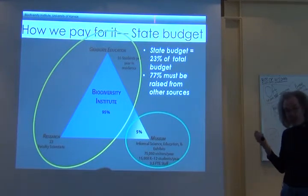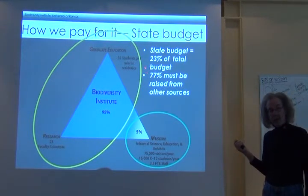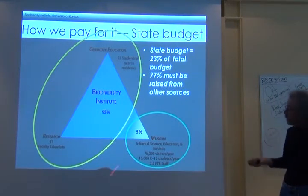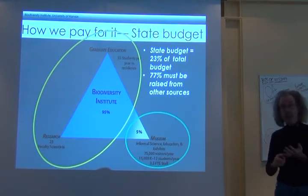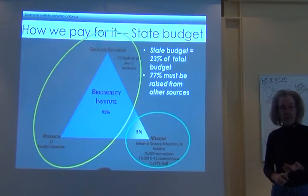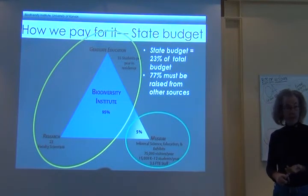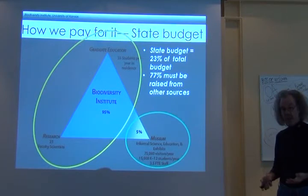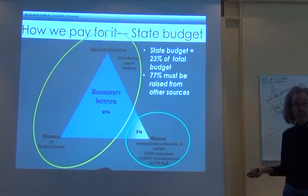The state only funds 23 percent of the activities at the University of Kansas. The rest — 77 percent — has to be raised from other sources: private sources, generous friends of the museum, generous friends of the university who give endowment funds, and grants and contracts from governments and industry.